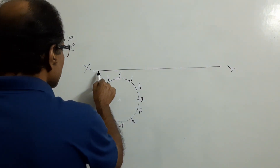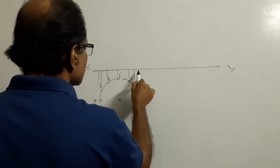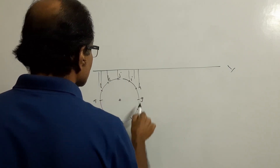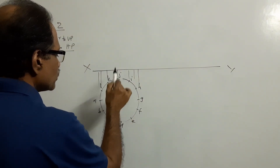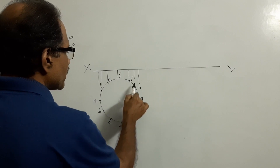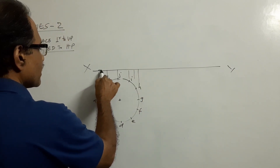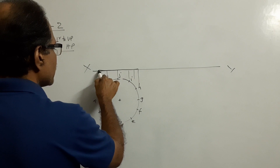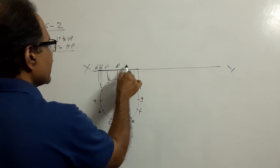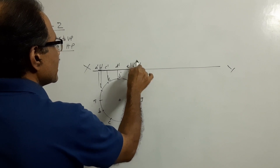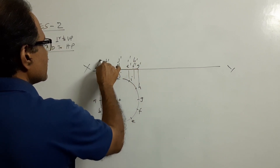Project all these points to the elevation. Through B will pass through L, C will pass through K, D will pass through J, E will pass through I, F will pass through H and G. The elevation is a line on XY. Label: A dash, B dash, C dash, D dash, E dash, F dash, G dash, H dash, I dash, J dash, K dash, L dash.